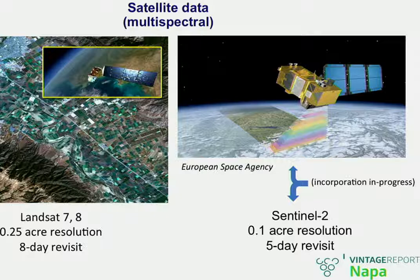The satellite systems we're talking about are actually higher resolution than some others out there. We're using Landsat, which in the remote sensing community is considered a fairly high-resolution sensor. It's about a quarter-acre resolution, so it's not what you're used to seeing on Google Earth, and it might not be super useful for managing by the vine, but a quarter acre could be pretty good for managing an overall field that's at least a few to several acres in size. Landsat is our main workhorse — it's a long legacy system first launched in the 1970s, and currently we're using Landsat 7 and Landsat 8, with a quarter-acre resolution and an eight-day revisit.